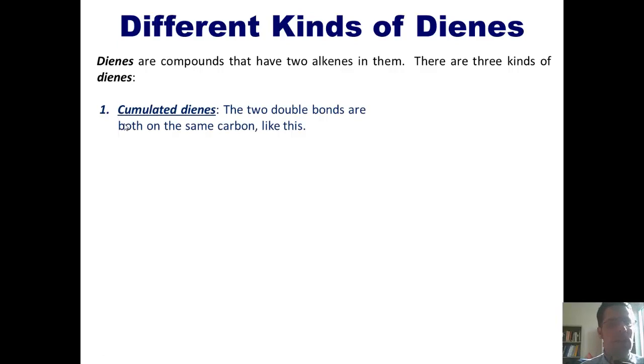The first one is cumulated dienes. These are dienes in which the two double bonds are both attached to the same carbon like this. Cumulated dienes are also sometimes called allenes.